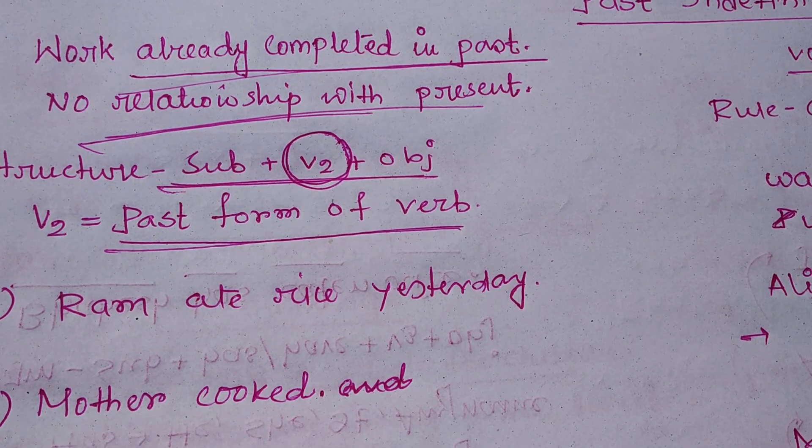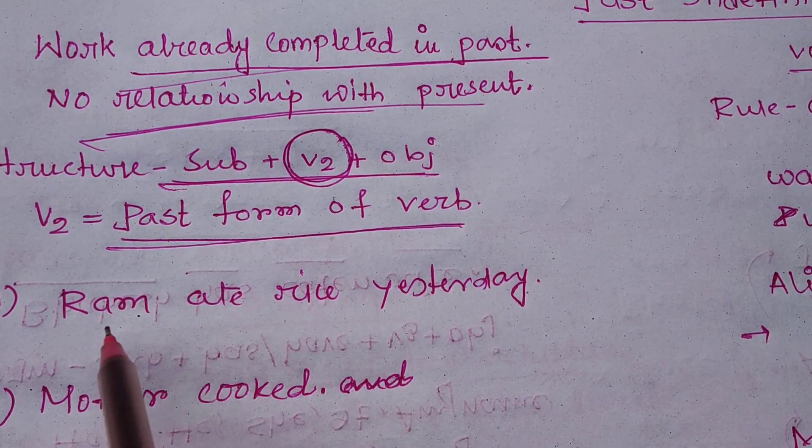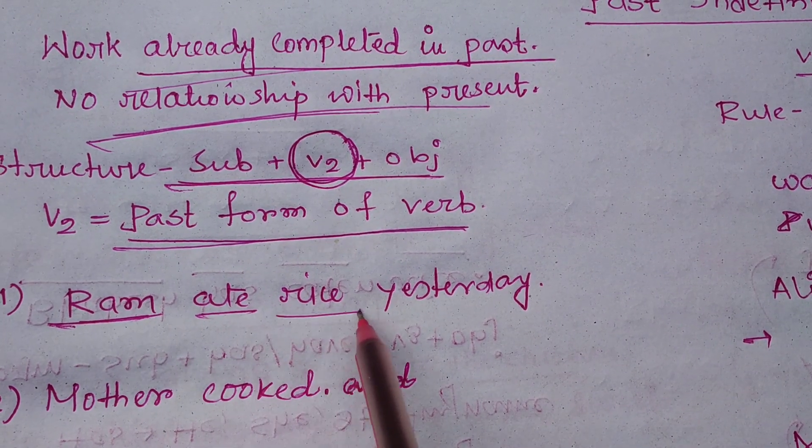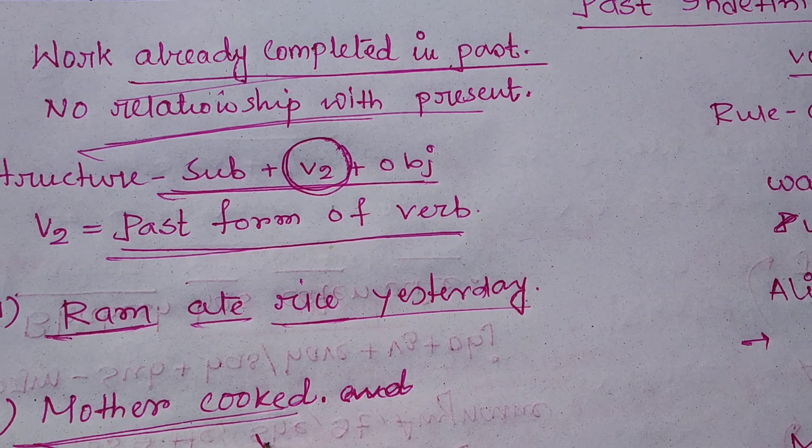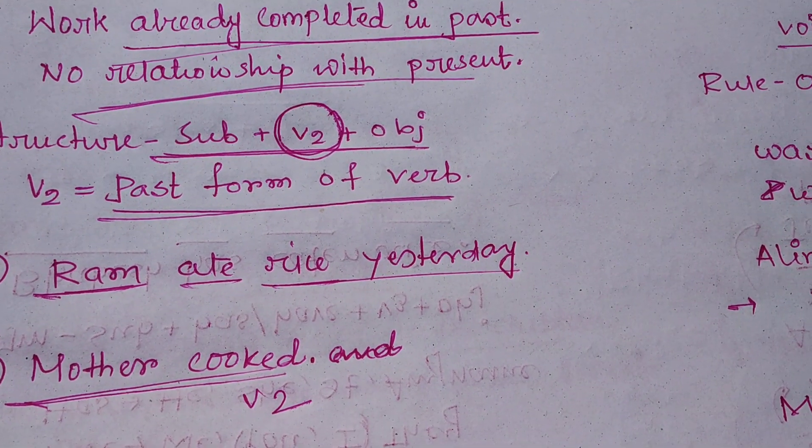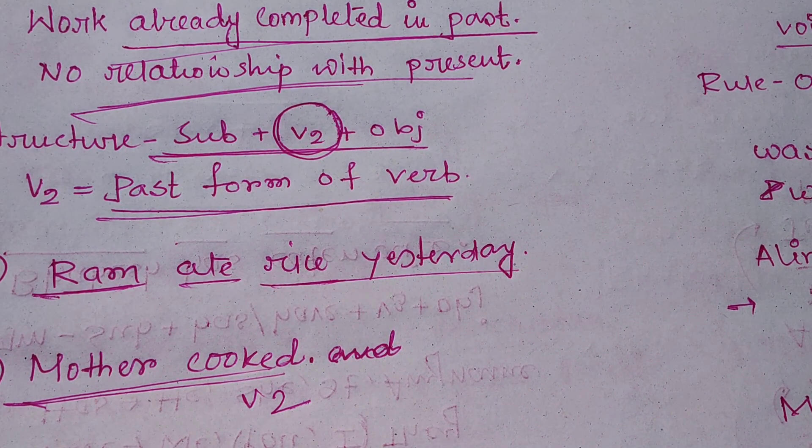Ok, here is some examples. Ram ate rice yesterday. Ram - subject, ate - V2, rice - object, yesterday. Mother cooked, ok, V2. These are some examples of past indefinite tense.